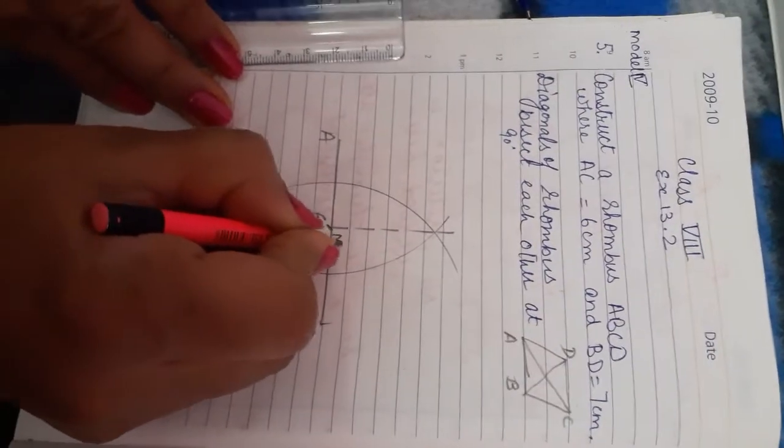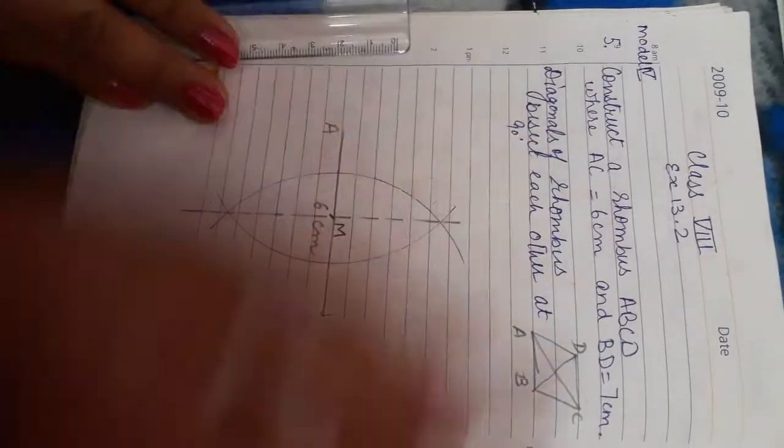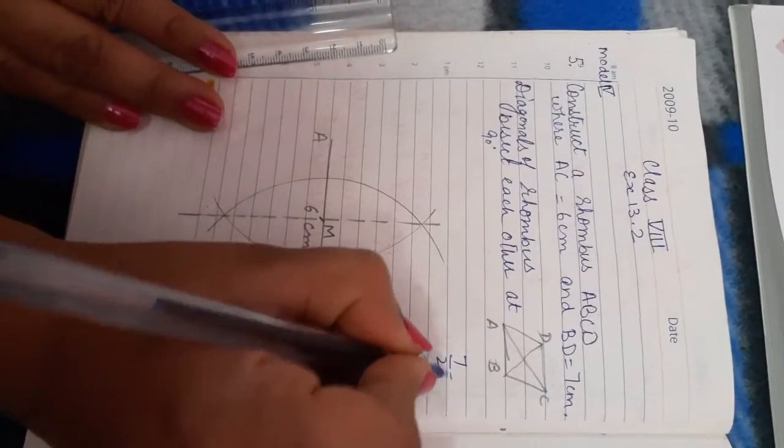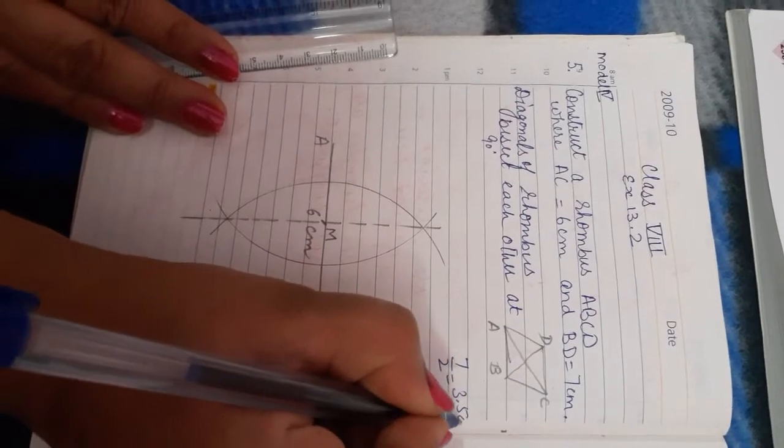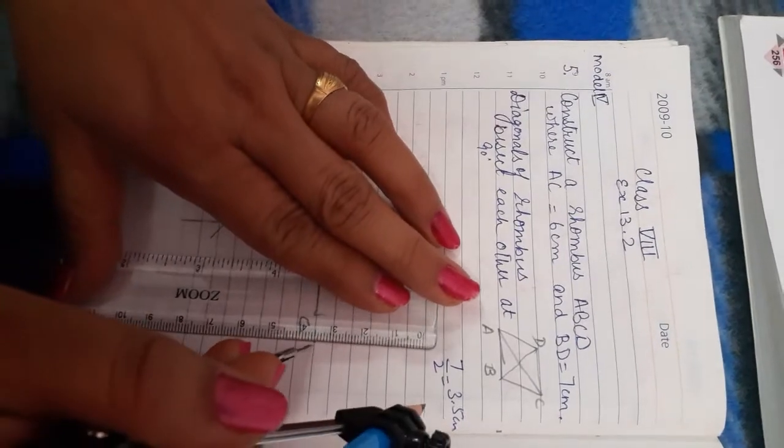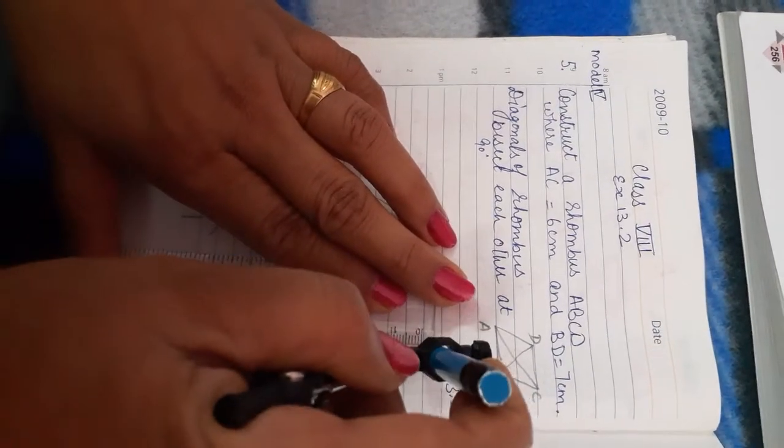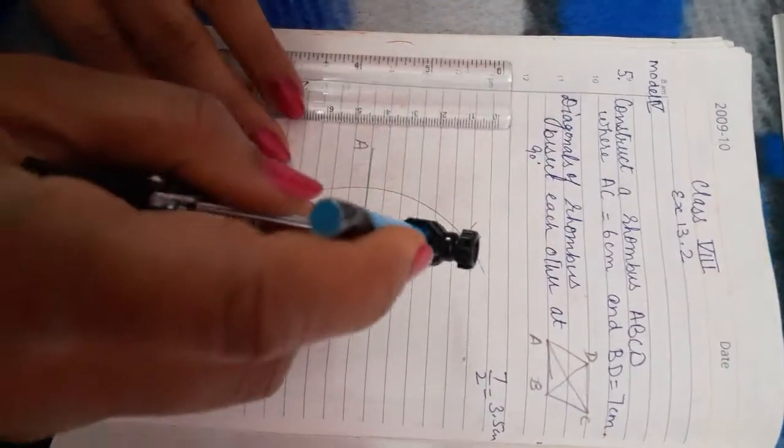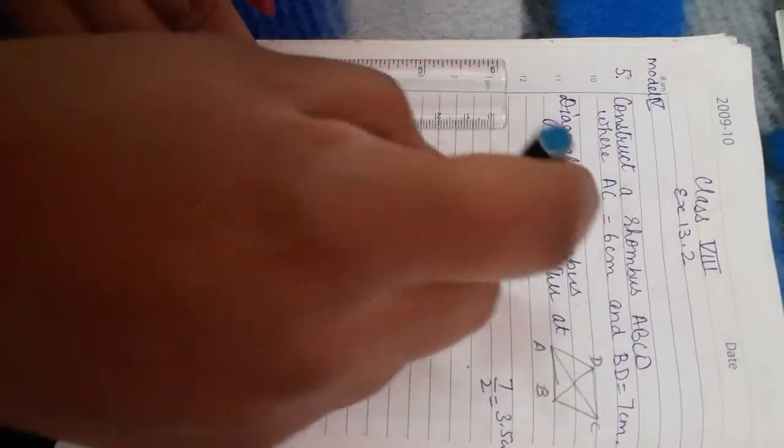This is our midpoint, suppose M. Now the second diagonal length given is seven centimeter, so half of seven is 3.5 centimeter. We have to take M point as center. First of all, take 3.5 centimeter, which is half of the second diagonal, as radius.